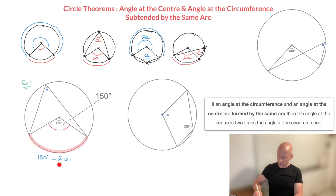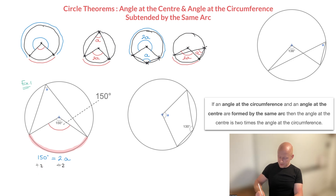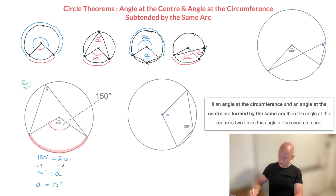To find A, all we have to do is get rid of this two that's multiplying it by dividing both sides by two. 150 divided by 2 is 75, so that's 75 degrees, equal to 2A divided by 2, which is just A. In other words, A is equal to 75 degrees. That's the answer.